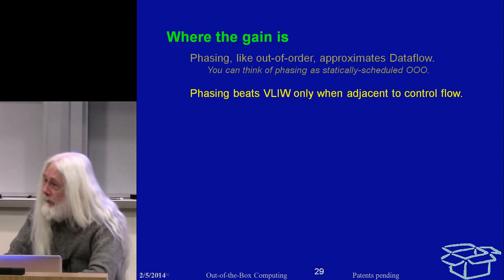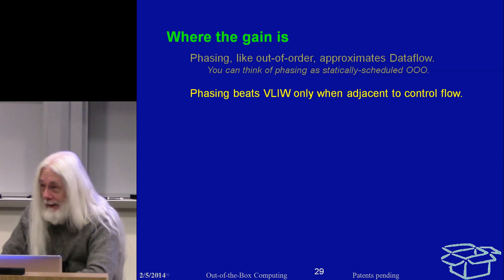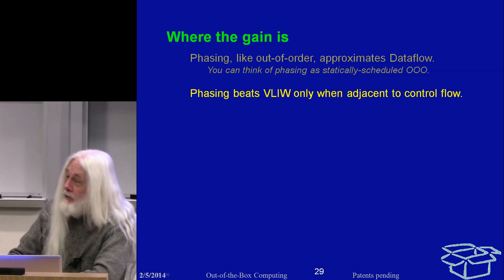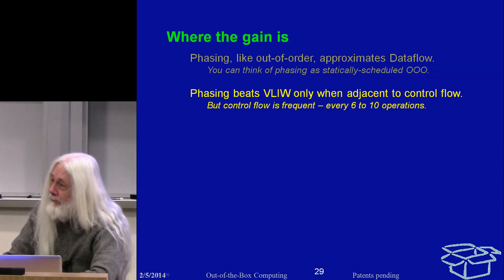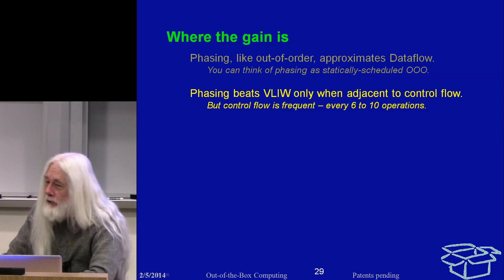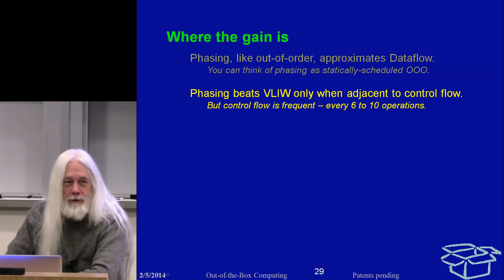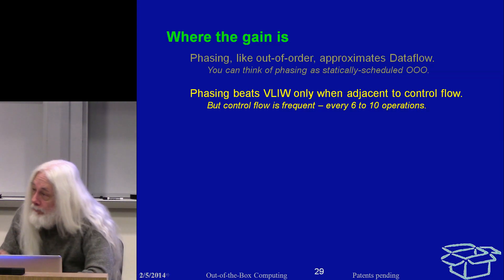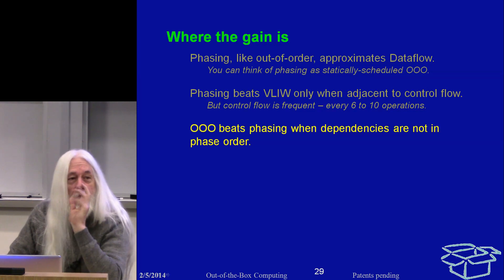Phasing has no benefit over VLIW in the middle of long codes — it benefits you only when you're adjacent to control flow. However, control flow is exceptionally frequent — on average every six to ten operations. One Mill instruction is quite happy with six to ten operations, so one characteristic you see in Mill code is that basic blocks tend to be one instruction long, no matter how much work they're doing. Out-of-order beats phasing when the actual dependencies of the data flow are not in the phase order, which is fixed on a Mill.